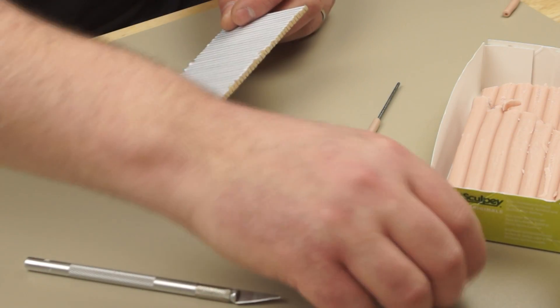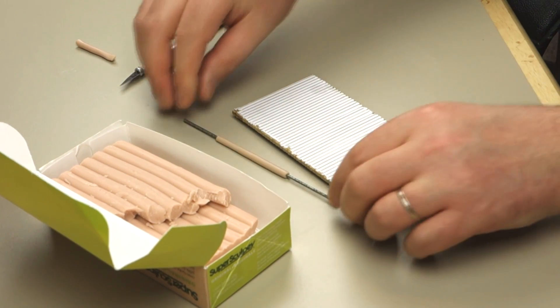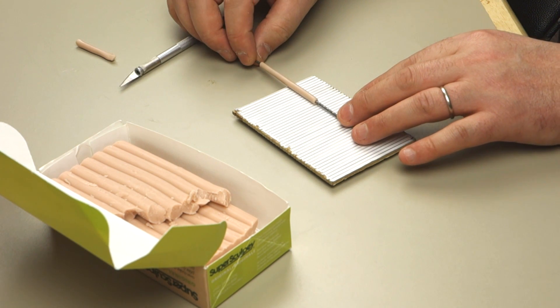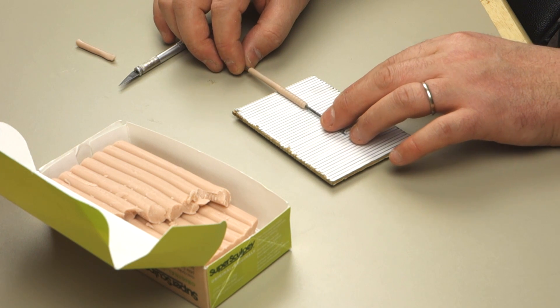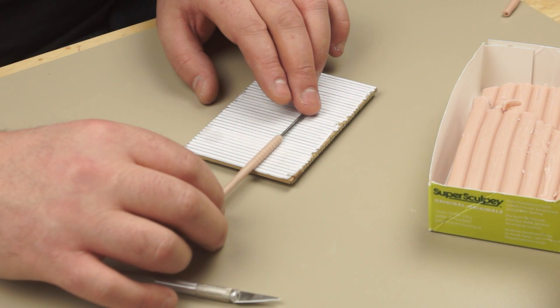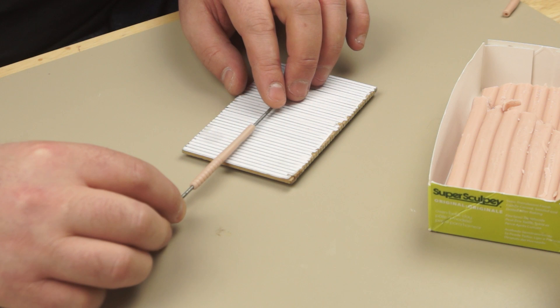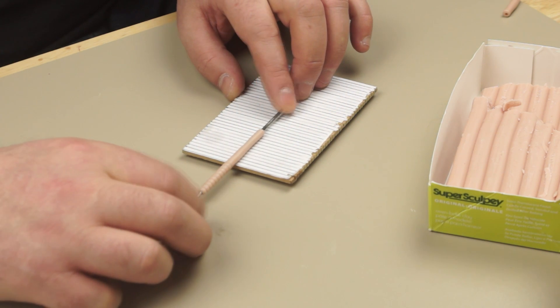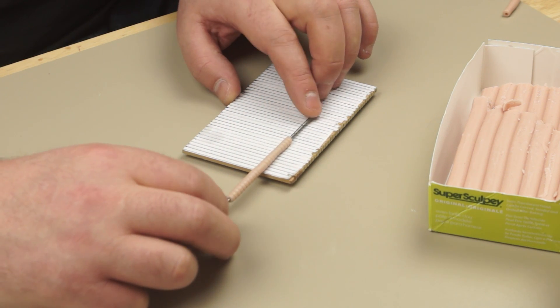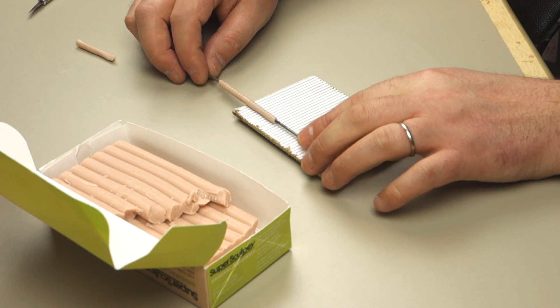To use the texturing tool I'm going to get a bit of polymer clay. Just stick it down. And then I can take my worm and just roll it just a bit under halfway along to pick up the texture. And then I'm going to turn it round and do the same on the other side.